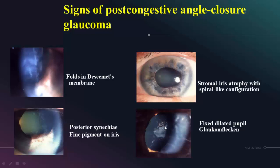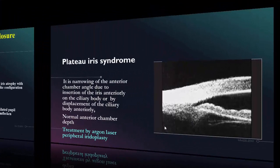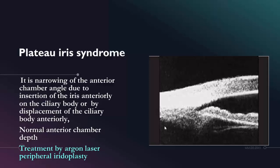Glaucoma flecken is a pathognomonic sign for a previous attack of acute angle closure glaucoma. Plateau iris syndrome is the second mechanism by which angle closure occurs. It includes narrowing of the anterior chamber angle due to anterior insertion of the iris, as seen in this photo — the iris inserts anteriorly on the ciliary body, or the ciliary body itself is displaced anteriorly. In these cases, the anterior chamber depth is normal — there is no shallow anterior chamber as in the pupillary block mechanism. Treatment here is not by YAG laser iridotomy, but by argon laser peripheral iridoplasty. Different argon laser burns are applied to the peripheral iris, causing contraction that pulls the root of the iris away from the angle, opening it and preventing angle closure attacks.